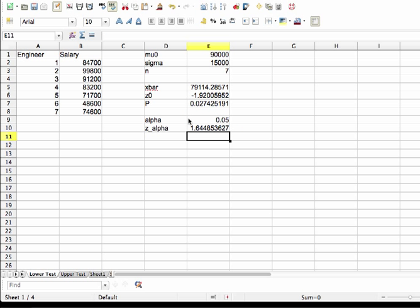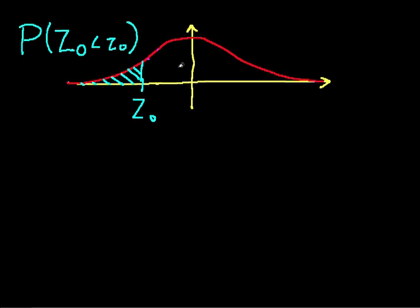So if we go back to our test, we have a lower test, so we're looking at a decision region that looks like this. This value here is minus z alpha, where again, z alpha is chosen so that this area under the sampling distribution is equal to our alpha, which is 0.05. And the question is, is z0 less than minus z alpha? And in this case, the obvious answer is yes. So basically what this tells us is that our data allows us to reject the null hypothesis that our company's salaries are about the same as the national average.